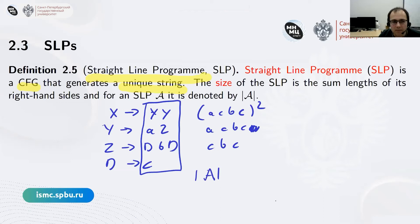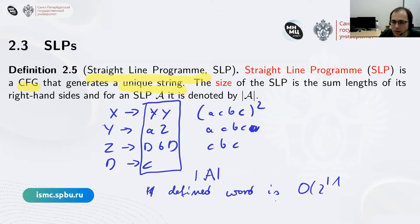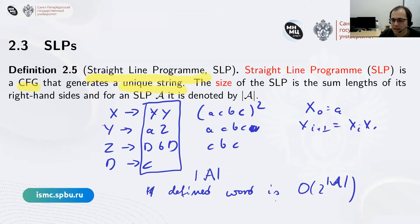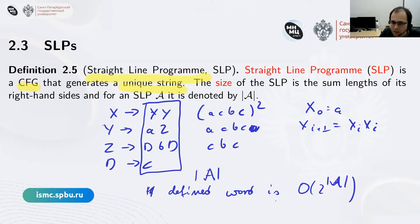The representation size is the sum of sizes of the right-hand sides. In general the defined word could be exponential in the size of the SLP. It's relatively easy to show such bounds: if X₀ is a letter and X_{i+1} = X_i X_i, then every consecutive variable defines a string twice as long, so the defined word size can be exponential in principle, though in practice it may be polynomial.